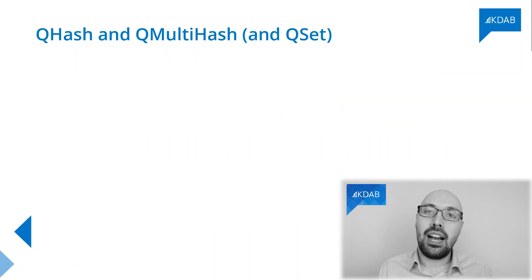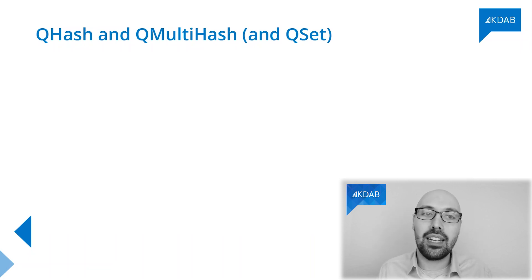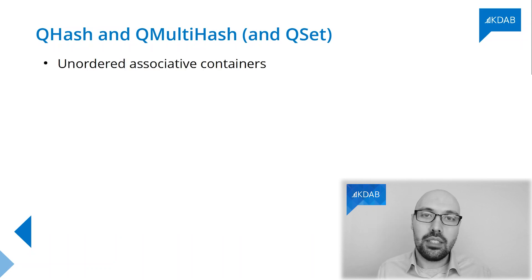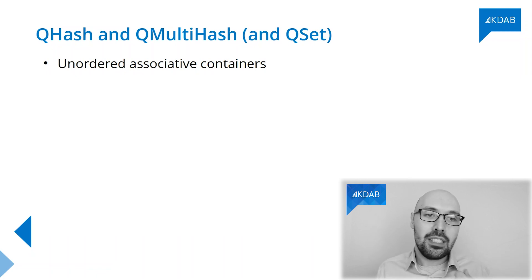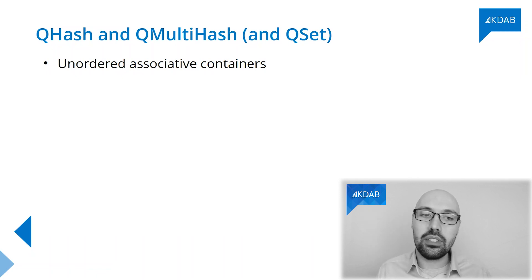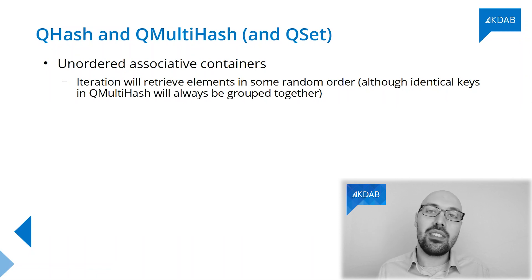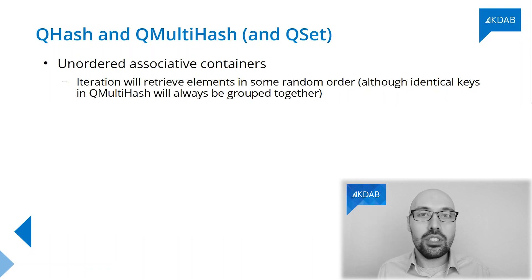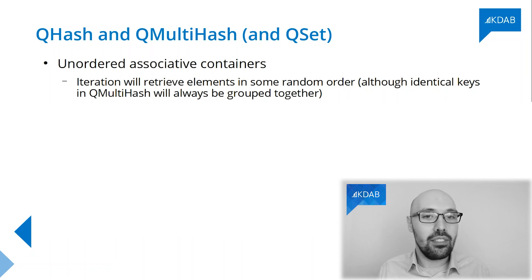The other family of containers are the hashes — QHash, QMultiHash, and also QSet, because QSet behaves like a QHash. Those are the non-ordered associative containers. They still map keys to values just like QMap, but the difference is that these ones don't preserve any specific order over your keys. So an iteration will retrieve elements from a QHash or QMultiHash in some random order. This order is not guaranteed to be stable — it can change throughout your application when you manipulate the hash, so don't rely on it.